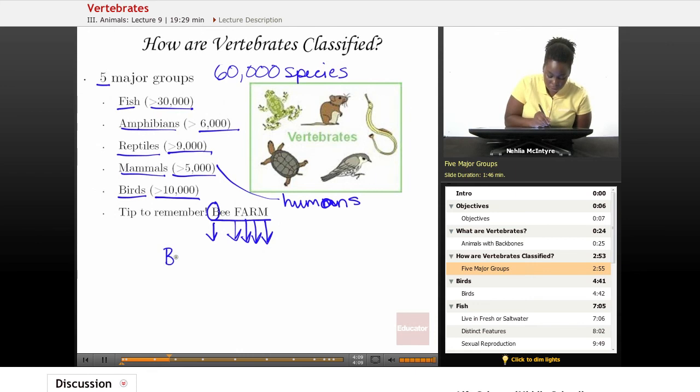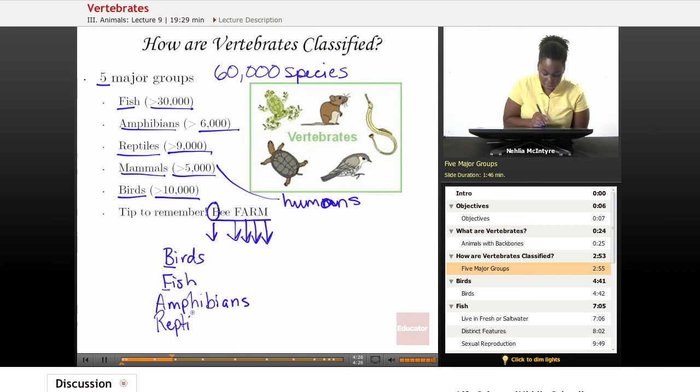Because the B is going to stand for birds. The F in farm is going to stand for fish. The A stands for amphibians. The R stands for reptiles, and the M stands for mammals.